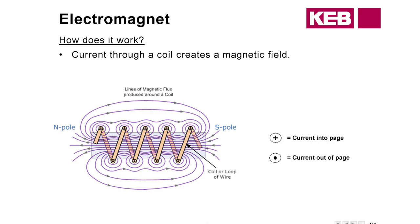One thing to note on the terminology: this plus symbol here means that the current is going into the page, and the dot here means current is coming out of the page. That's how we illustrate on a 2D plane what it would look like in 3D. So if you look at the top, we've got the plus — the current is going into the page. And then at the bottom, we've got it coming out. That would create your north and south poles on that conductor.